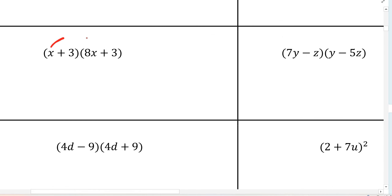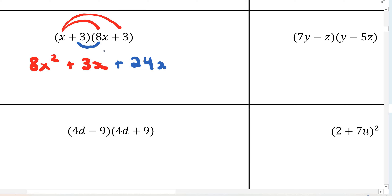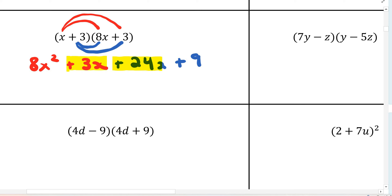We have another FOIL question. So x times 8x is going to be 8x squared. x times 3 is positive 3x. Working the inside: 3 times 8x is positive 24x. And positive 3 times positive 3 is positive 9. Then combining the middle terms: 3 plus 24 gives 27x, so the answer is 8x squared plus 27x plus 9.